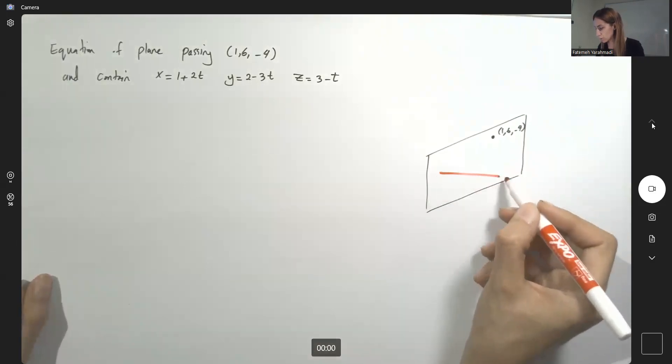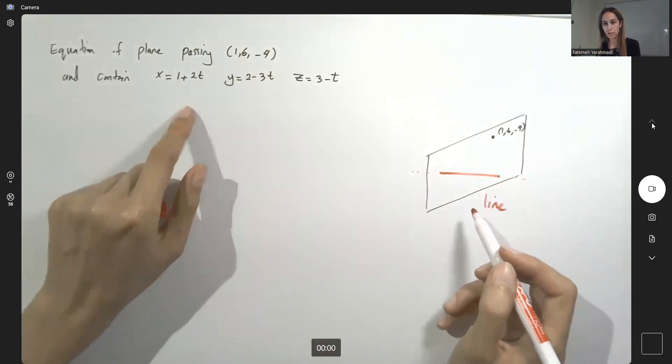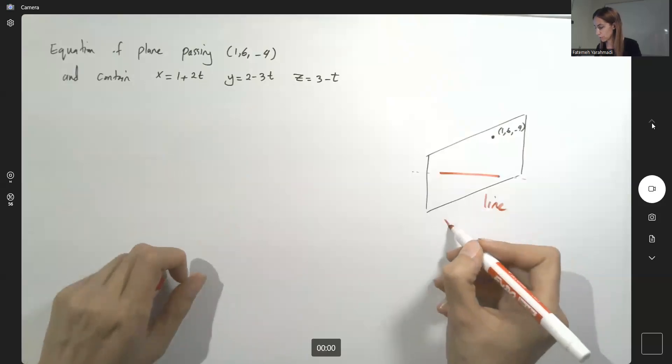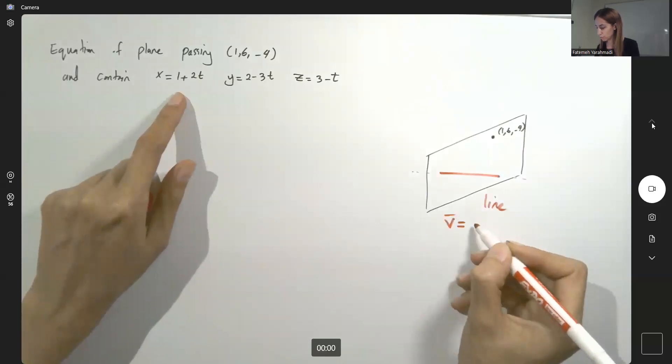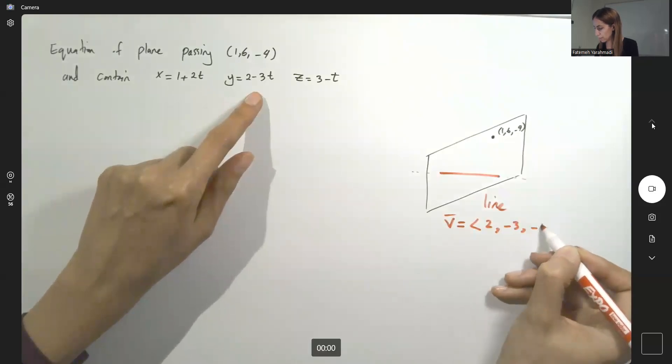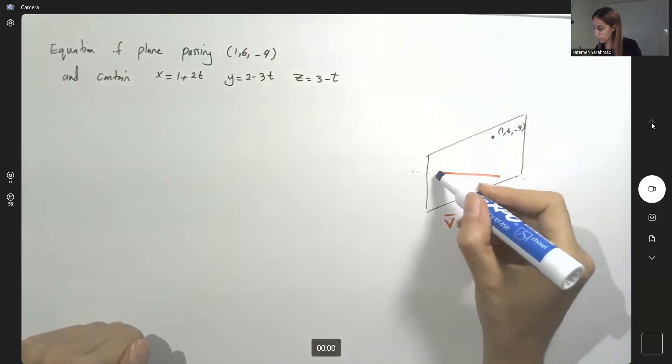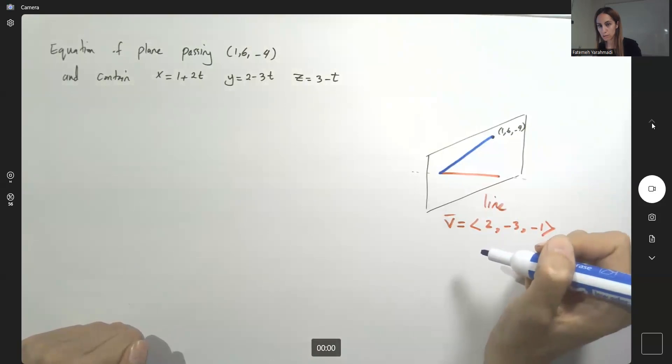So this is my line passing through the plane. It has a direction vector. Direction vector of the line v is equal to 2, negative 3 and negative 1. The coefficients of t. If I can find another vector connecting these two together and call it u,